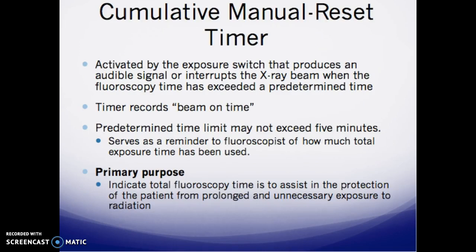The cumulative manual reset timer indicates total fluoro time to assist in protecting the patient from prolonged and unnecessary radiation exposure. It is activated by the exposure switch, and an audible signal typically sounds when the beam is on. After five minutes of recorded beam-on time, the system requires a reset to make the operator aware of total beam-on time. You must record beam-on time for patient safety, and predetermined time limits may not exceed five minutes.